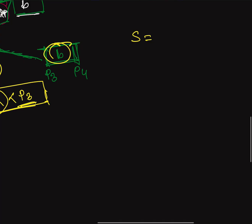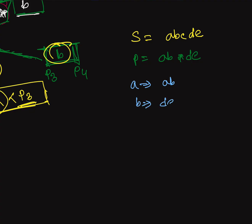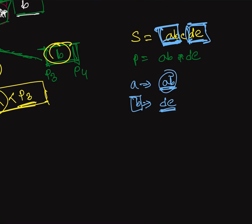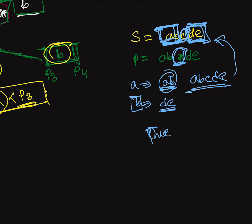For example, if s is 'abcde' and p is 'ab*de', string a is 'ab' and string b is 'de'. We find 'ab' is present in s, then we find 'de' is present to the right of 'ab'. The character 'c' in between can be replaced by the star. So we return true.